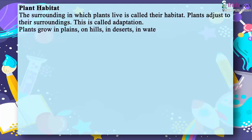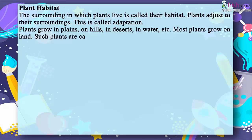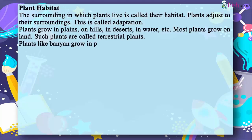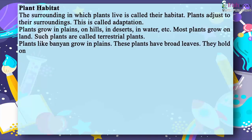Most plants grow on land. Such plants are called terrestrial plants. Plants like banyan grow in plains. These plants have broad leaves. They hold onto the soil with the help of roots.